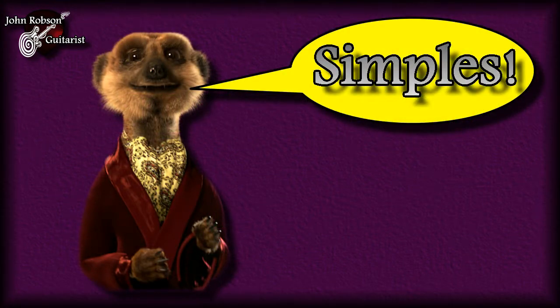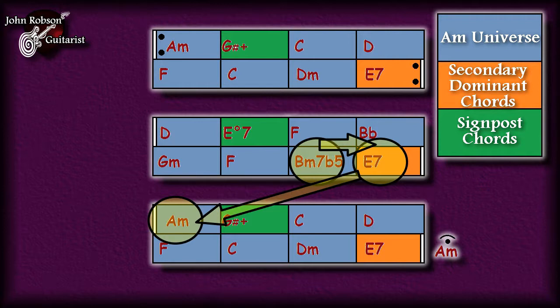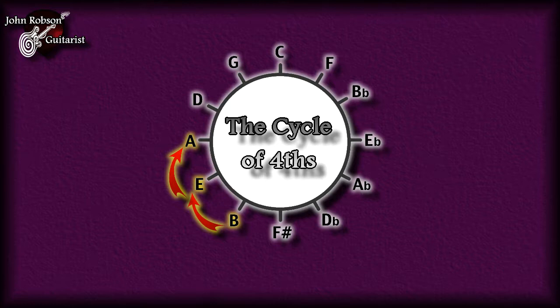The B minor 7 flat 5 chord is in effect part of the A minor universe. If you look at the little sequence where it goes from B minor 7 flat 5 to an E7 chord and back to A minor, and you look at the cycle of fourths, you'll see that we're basically moving clockwise around that cycle. And as I mentioned, chord sequences that move clockwise around that cycle do sound pleasing to the ear — and that's exactly what this is doing.